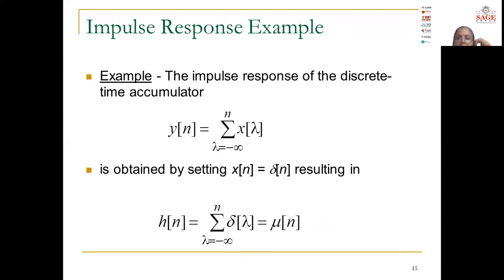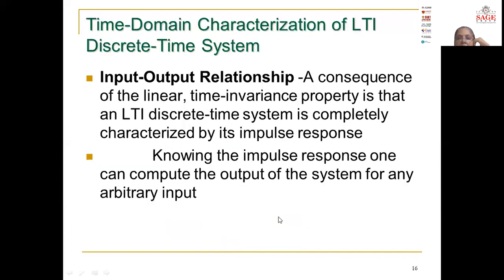The impulse response of the discrete time accumulator is obtained by shifting the impulse from minus infinity to n. This shows the impulse response. The time domain characterization of an LTI discrete time system: a consequence of the linear time invariance property is that an LTI discrete time system is completely characterized by its impulse response.